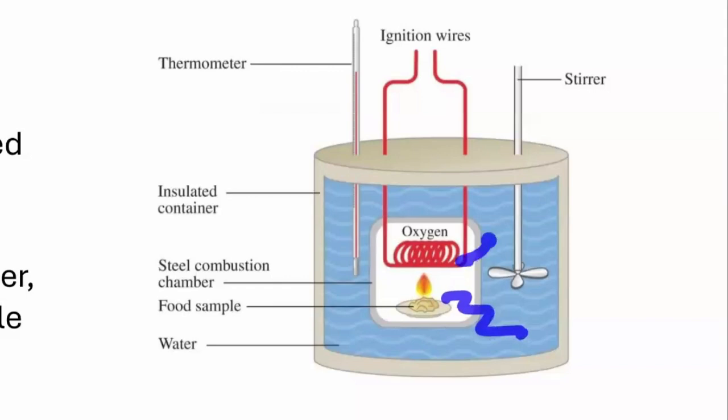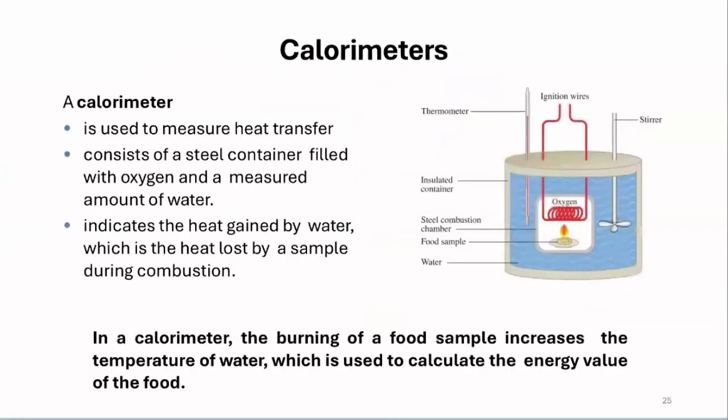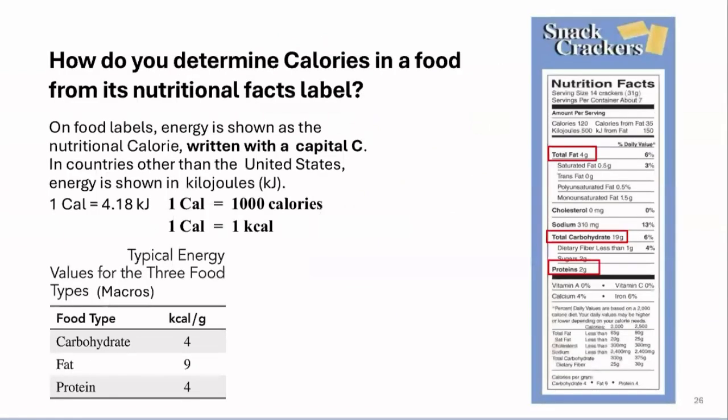Since that food sample is going to release heat energy, this heat energy is going to get out of this vessel and move into the water. The stirrer makes sure that heat energy is in the water evenly. Because we're looking at the temperature difference, a thermometer is going to look at how much heat was released from the food sample. Using equations, scientists performing such experiments can calculate, based on the heat that is released, how many nutritional calories are in a food sample.